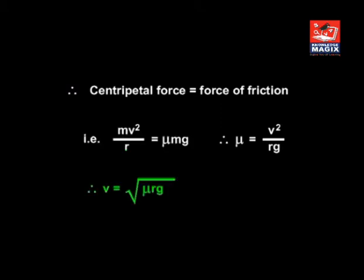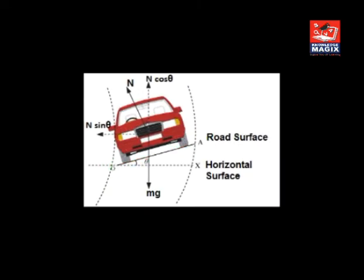Therefore, v = √(μrg), where μ is the coefficient of friction between tyres of car and road surface.